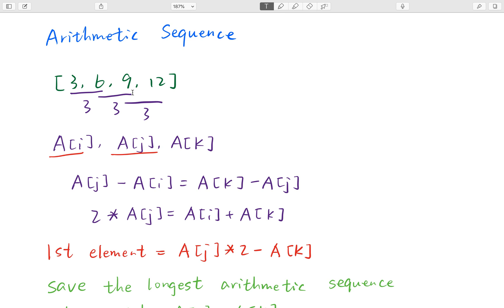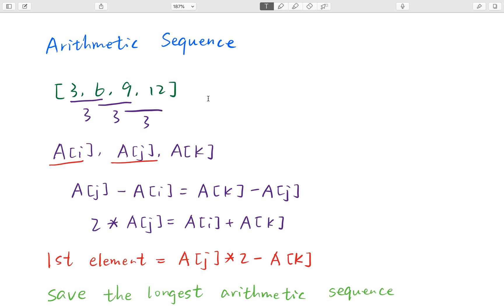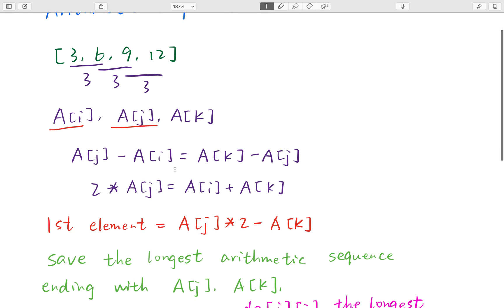So next we go to the 9 and 12. The same way we need to find whether they have 6 before 9. And we can find 6. In that case, we can just use the preceding result, which is 3 plus 1 equal to 4. Why? Because we already calculated the longest arithmetic sequence ending with 6 and 9. So now we append the 12 on the preceding longest arithmetic sequence. So we just add 1. In that case, we need to save the intermediate result, which is the longest arithmetic sequence ending with index i and j, right? For the future use.